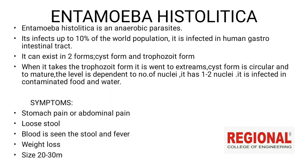When it takes the trophozoite form, it goes to extremes. The cyst form is circular. The maturity level is dependent on the number of nuclei. It has 1 to 2 nuclei, and transmission occurs through contaminated water.